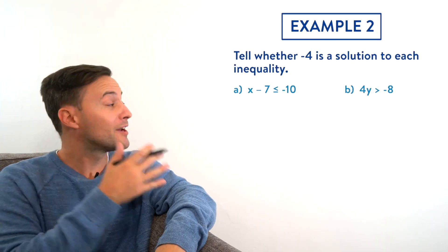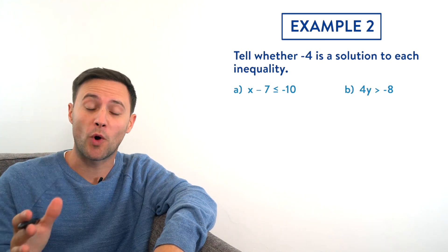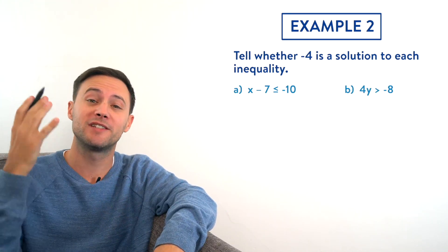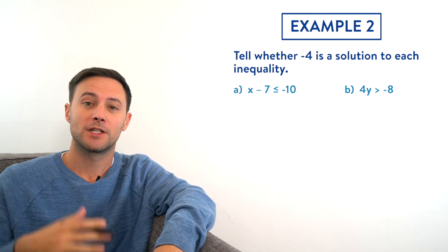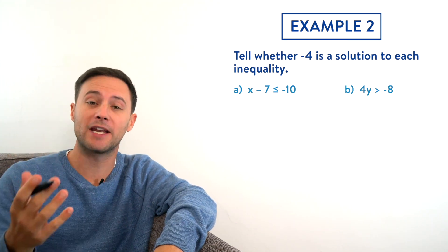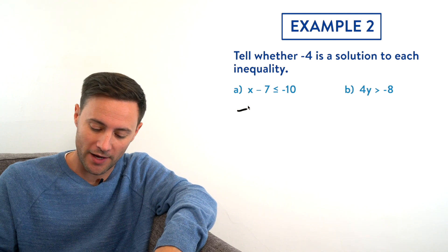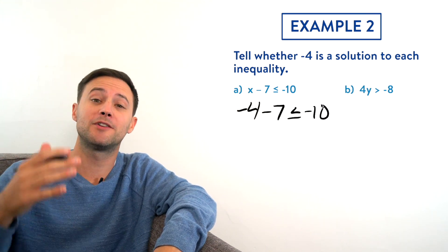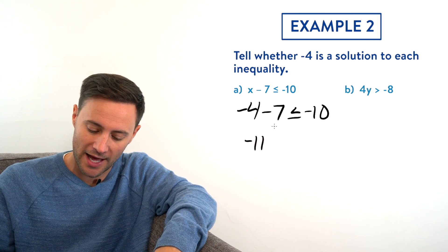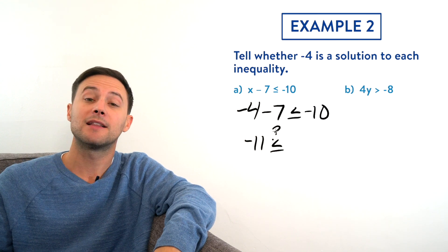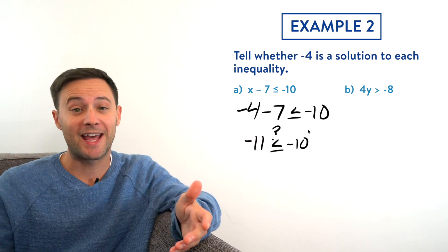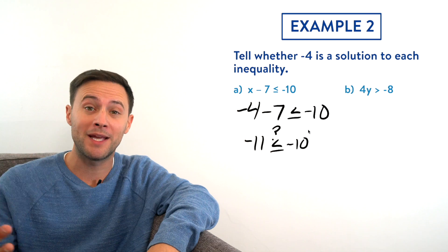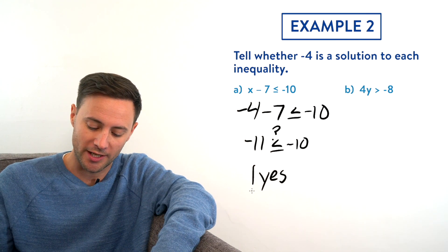Let's try Example 2: tell whether negative four is a solution to each inequality. To check, we substitute and simplify to see if it makes the inequality true. For part a: x - 7 ≤ -10. Substituting negative four for x gives -4 - 7, which equals -11. Is -11 less than or equal to -10? Negative eleven is to the left of negative ten on the number line, so yes — negative four is a solution.